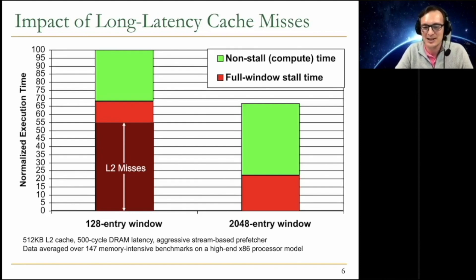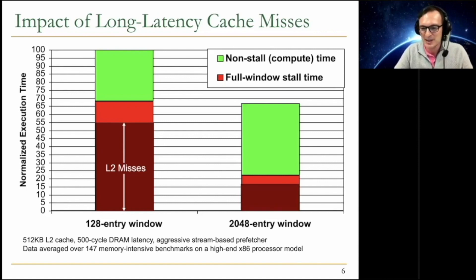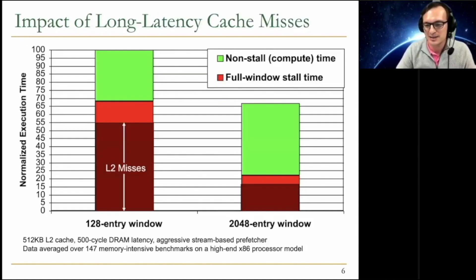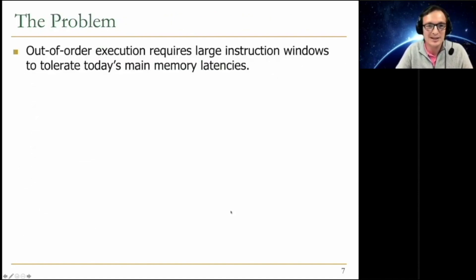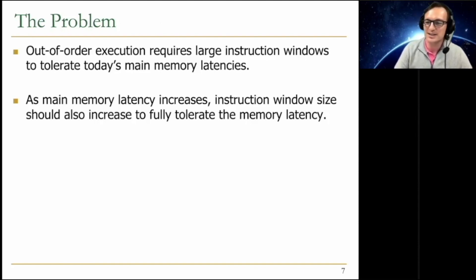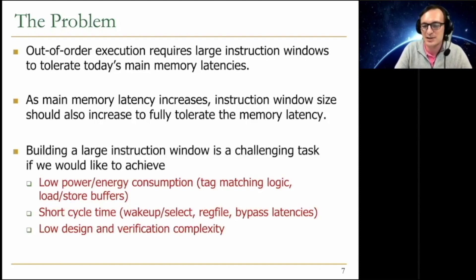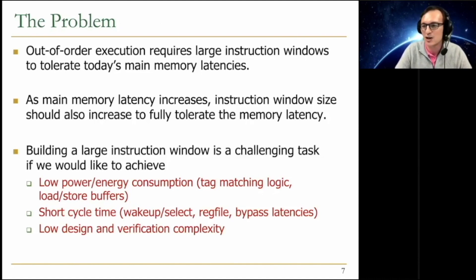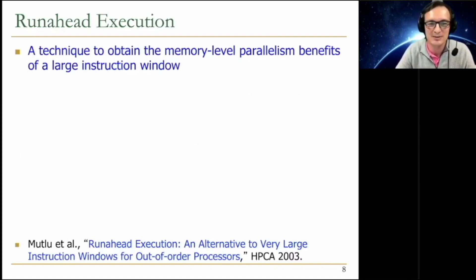One way to actually get rid of that impact is building a much larger window. That reduces your execution time and clearly reduces the stall time as well. The problem is, as main memory latency increases, this instruction window size should also increase to fully tolerate the latency. And building a large instruction window is a challenging task if you would like to achieve at the same time low power and energy consumption, short cycle time, and low design and verification complexity.